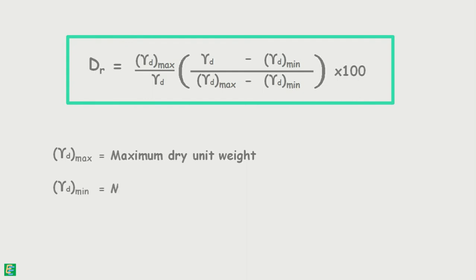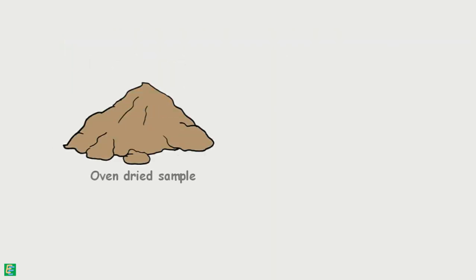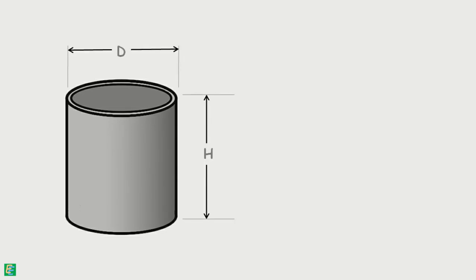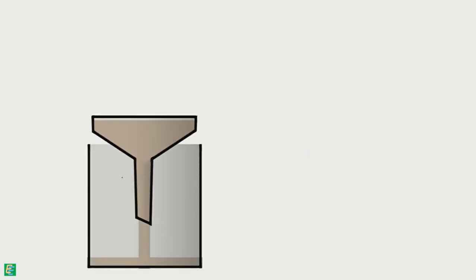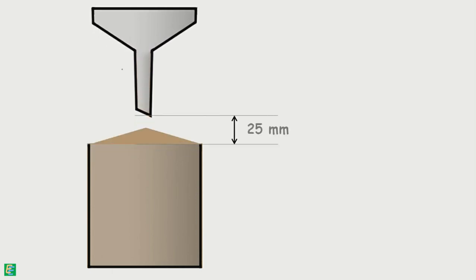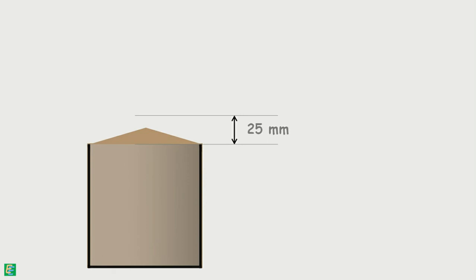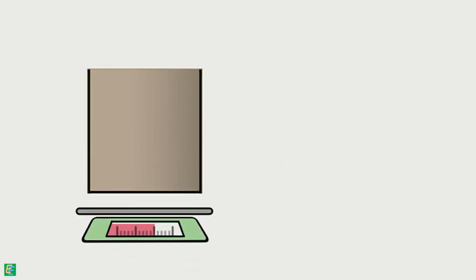We can determine the dry unit weight of differently dense soil masses experimentally as follows. We take the oven-dried soil sample; if it contains bigger lumps, we pulverize it. Then we take a metal mold, note its height and diameter to calculate its volume, and record its weight as W1. We pour the dry pulverized soil into the mold using a pouring device held so that the height of free fall of the soil is always 25 mm. This way, the soil is considered to be in its loosest condition. We overfill the mold and, using a rod or plate, level the soil surface to the brim. This loosely filled soil mold is weighed again and the weight is noted as W2.